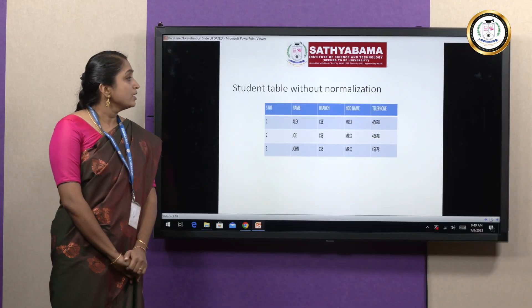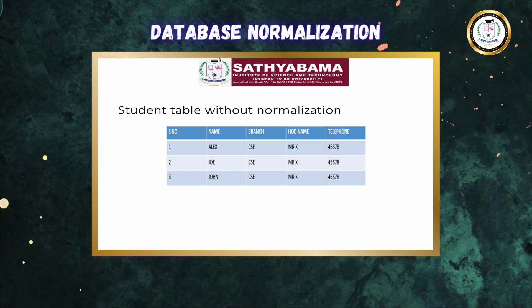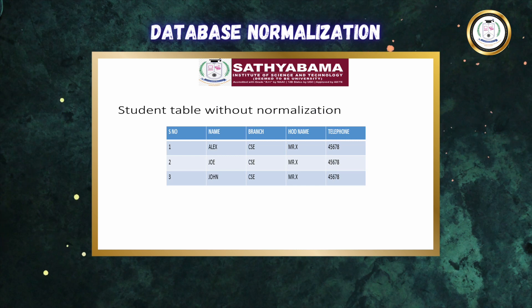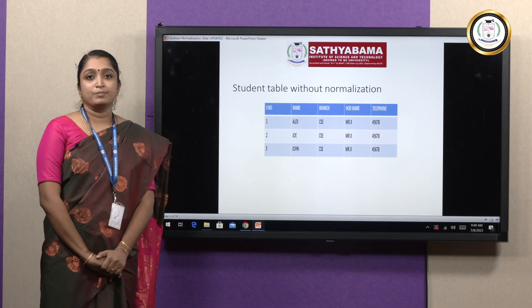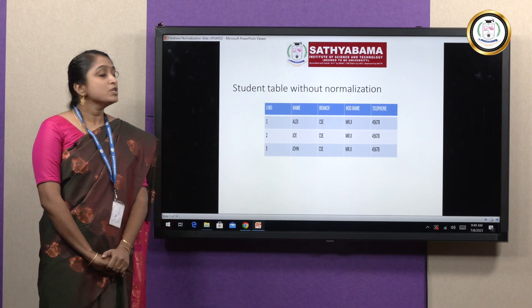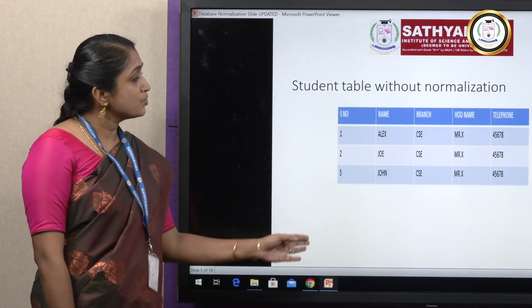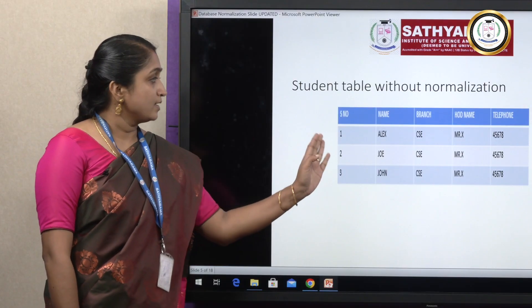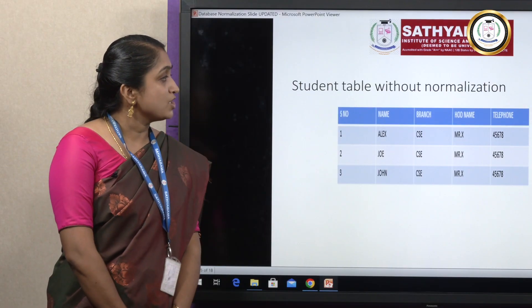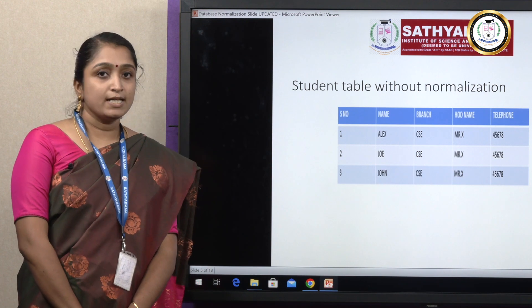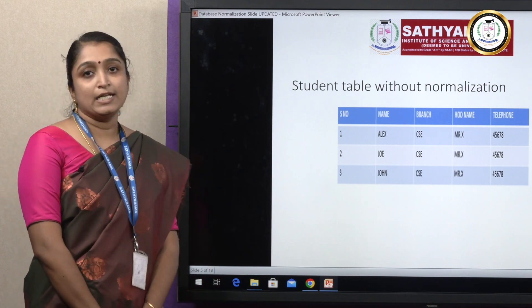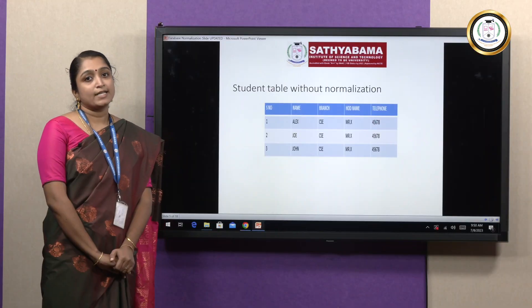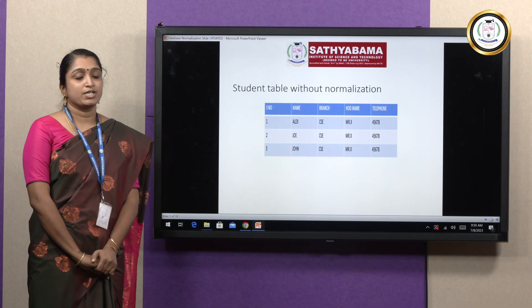Now, deletion anomaly. Suppose this group of students have graduated and we are going to remove the data from the database. Along with that student, the branch, HOD name, and telephone — which is still relevant — also need to be deleted. That is the deletion anomaly.